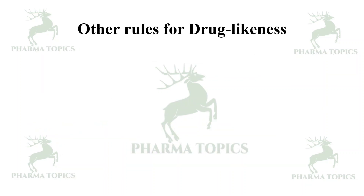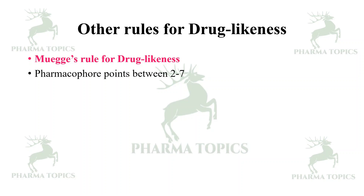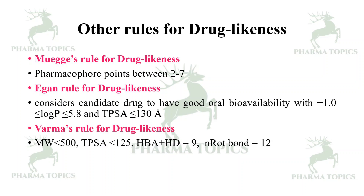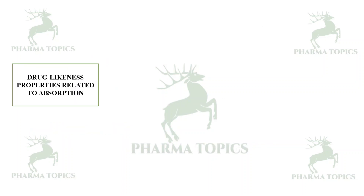There are also other rules used for drug likeness screening. Muegge's Rule considers pharmacophoric features, where pharmacophore points should be between 2 and 7. Egan's Rule considers oral bioavailability with logP between −1 and 5.8 and total polar surface area less than 130 Ångströms. Veber's Rule specifies molecular weight less than 500, total polar surface area less than 125, hydrogen bond donors plus acceptors approximately 9, and rotatable bonds not exceeding approximately 12.